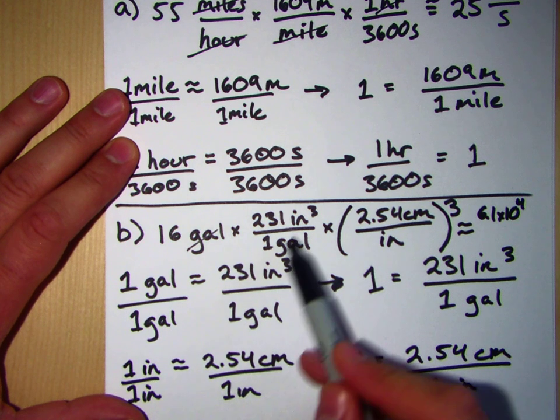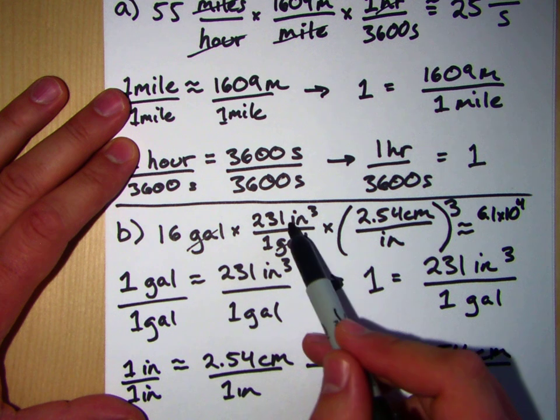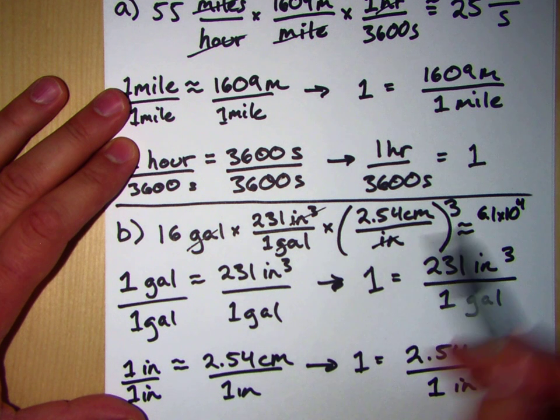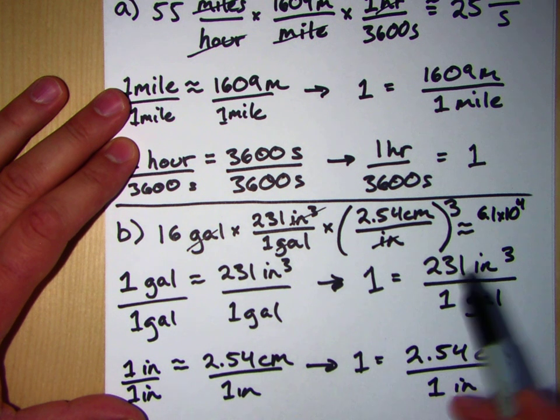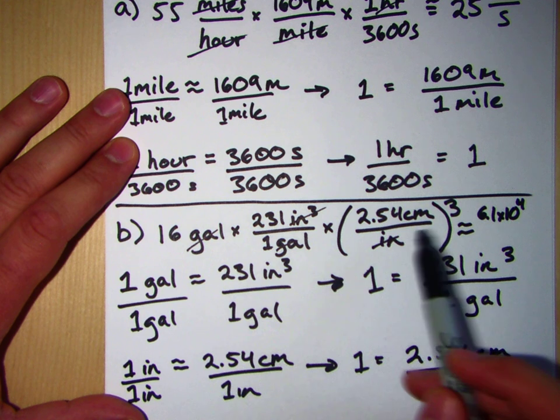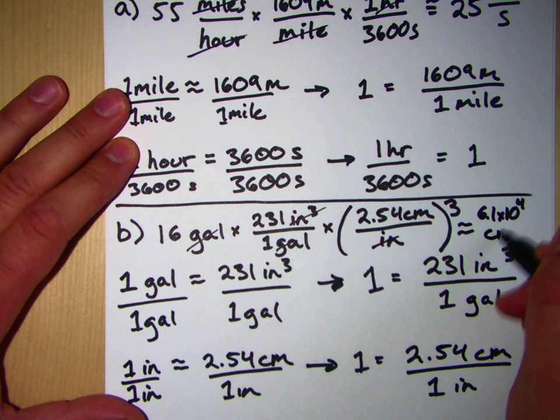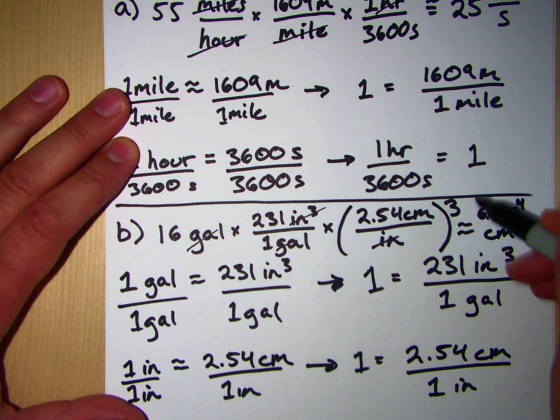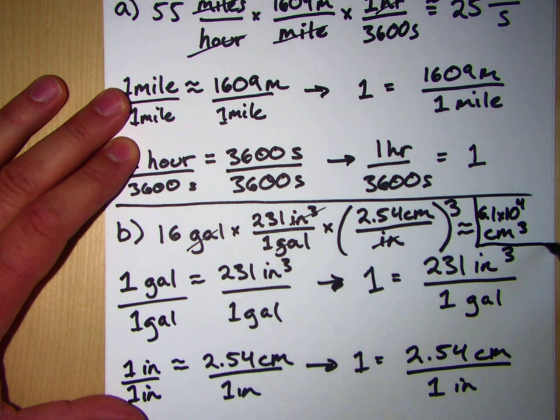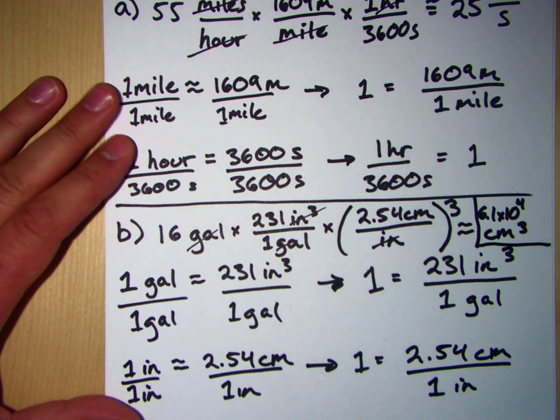And what I'm going to have is the gallons are going to cancel out. These inches cubed are going to cancel out with these inches cubed. And what I'm going to have then, the only thing I have left is centimeters cubed or cubic centimeters. I'm sorry, I ran out of room here, but this should be the right answer for part B. 6.1 times 10 to the 4th cubic centimeters.